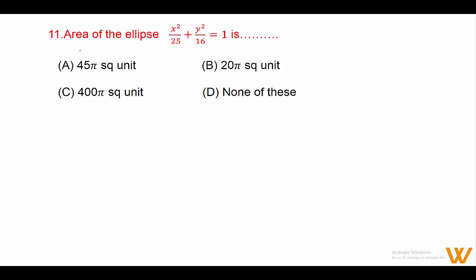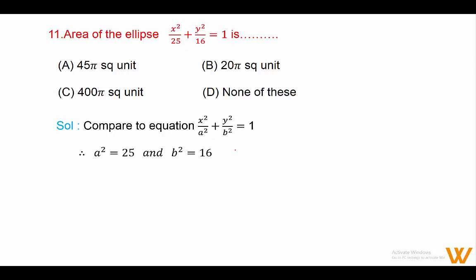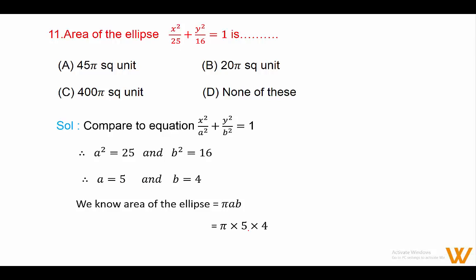Question 11: Area of the ellipse x²/25 + y²/16 = 1. Comparing with standard form x²/a² + y²/b² = 1, we get a² = 25 and b² = 16, so a = 5 and b = 4. Area of ellipse = πab = π × 5 × 4 = 20π. Answer is option B: 20π square units.